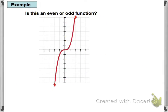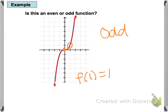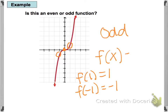The next graph looks symmetric over the origin, so it's an odd function. Looking at f of 1: it's positive 1. But f of negative 1 is the opposite — negative 1. Because the output values are opposites, the function is odd. So f of negative x equals negative f of x when a function is odd.